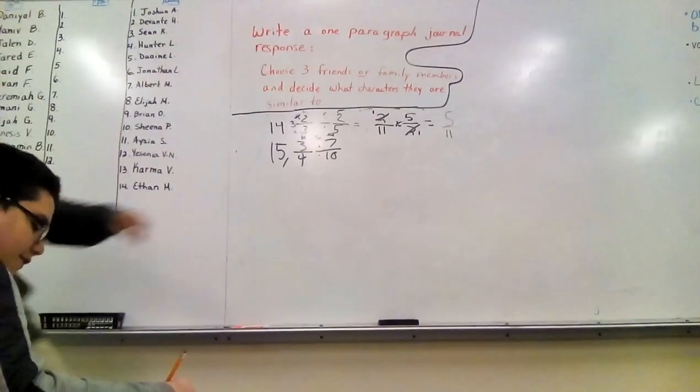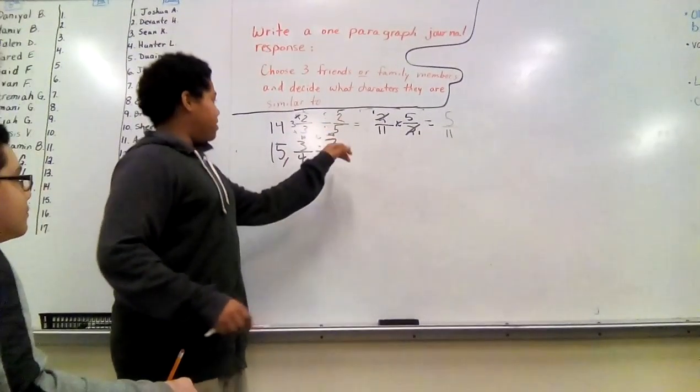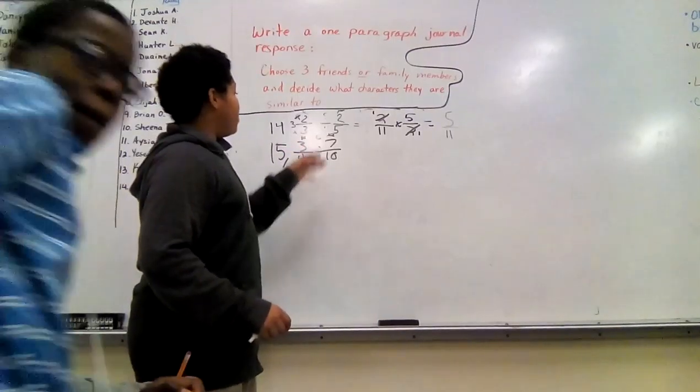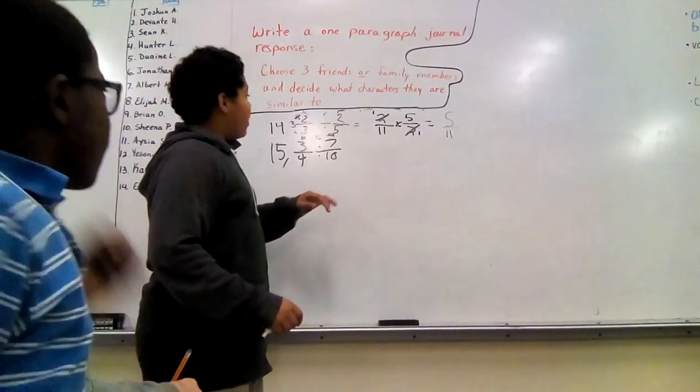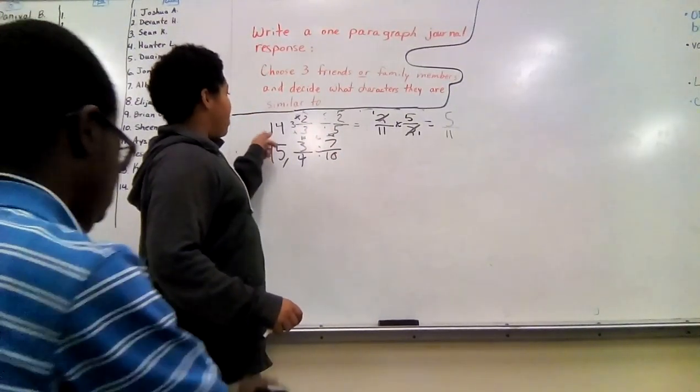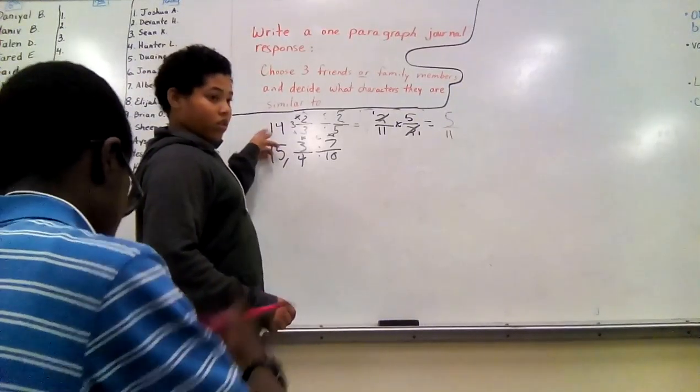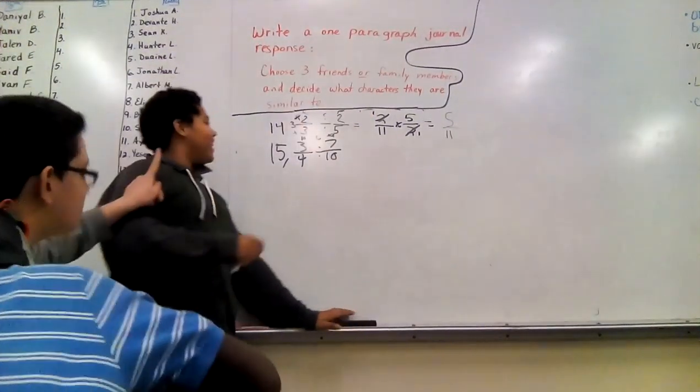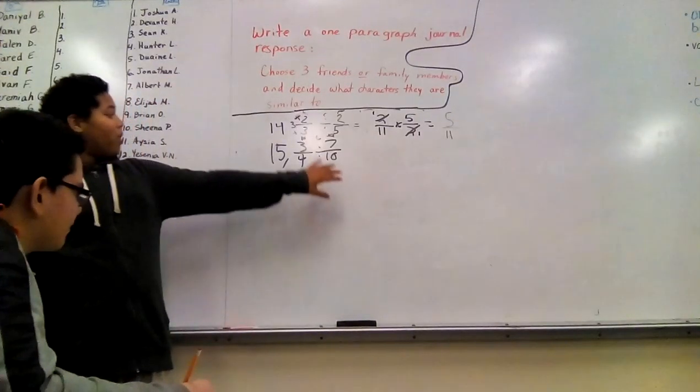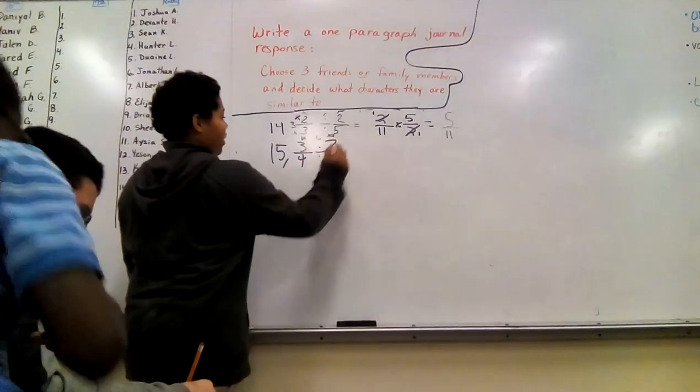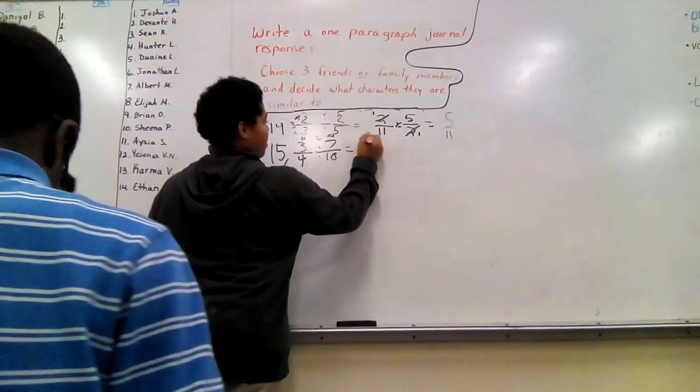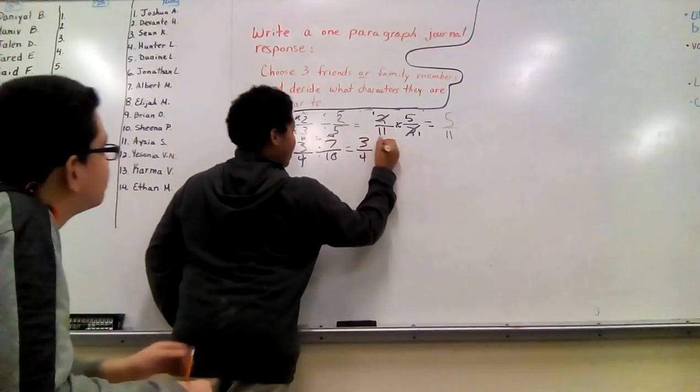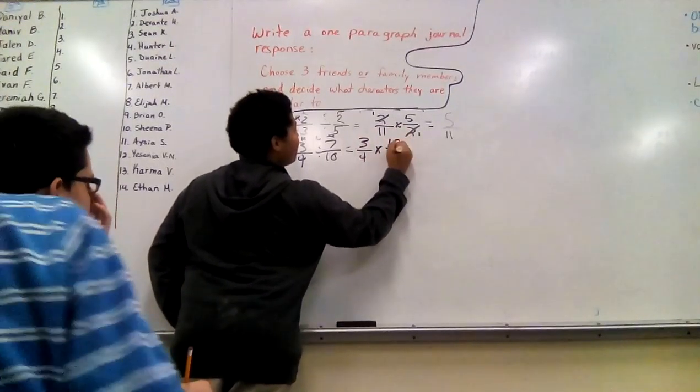Let's do this. Alright guys, so we have 3/4 divided by 7/10. So now we're going to do 3/4 divided by 7/10. We're going to equal this to 3/4 times 10 over 7, right?